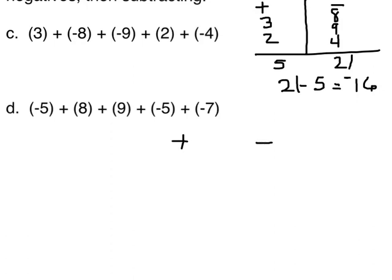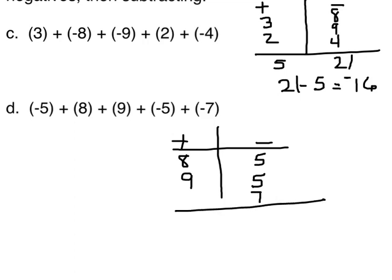All right, let's do the same thing with these two. We have on the negative side 5 and 8. Over here on positive, 9, positive another 5, and a 7. 8 plus 9 is 17. 5 plus 5 is 10 plus 7 is 17. So what we actually have is 17 minus 17, which gives us a total of 0.